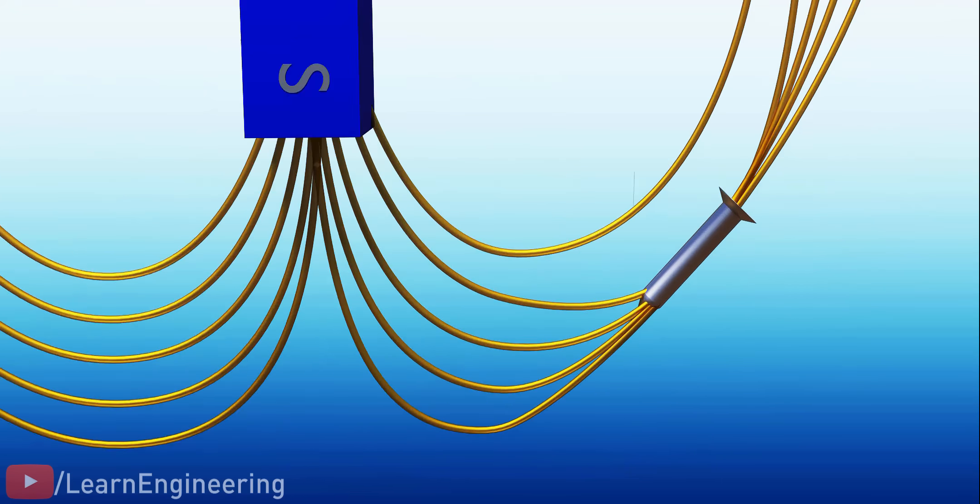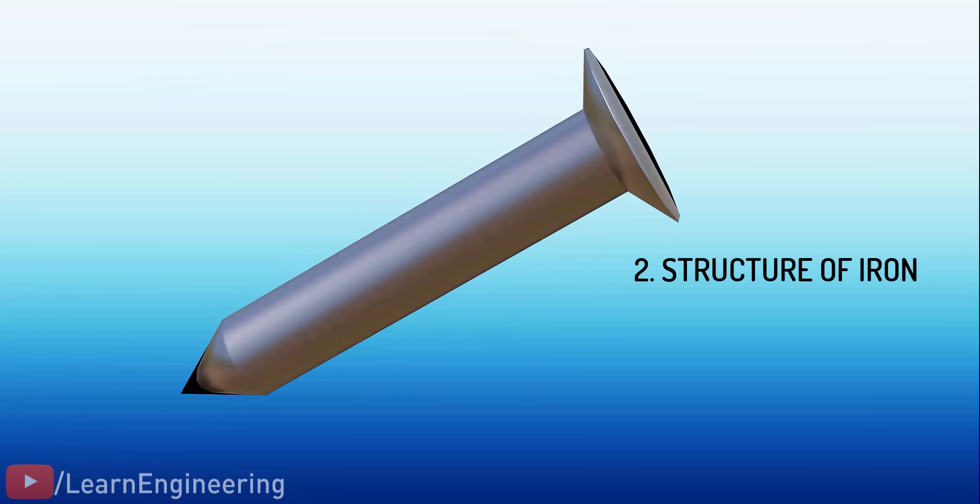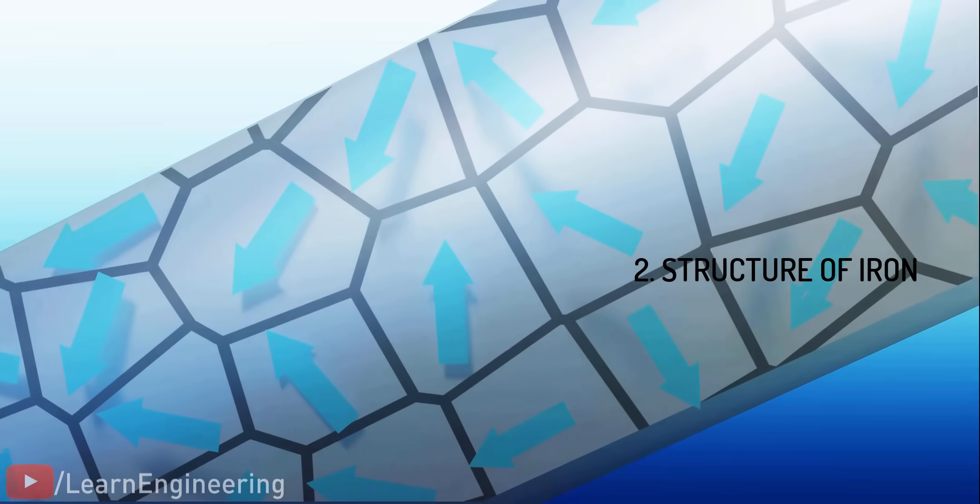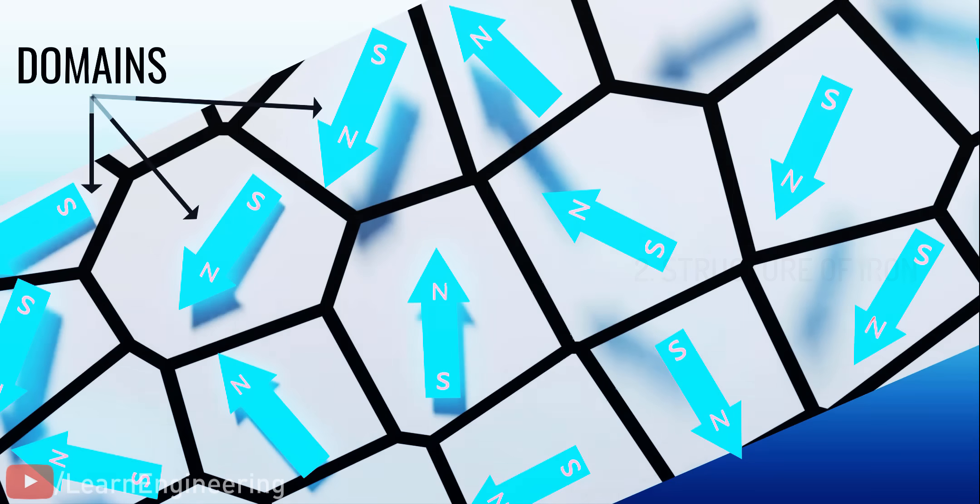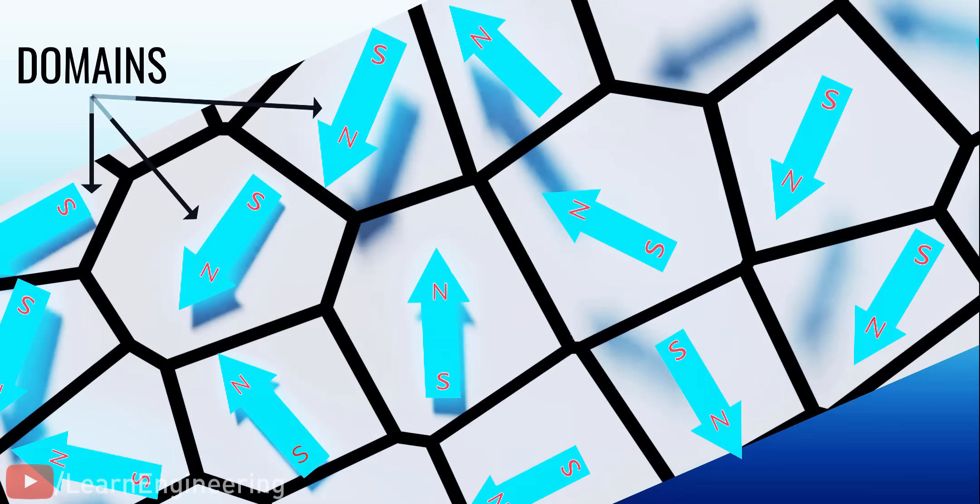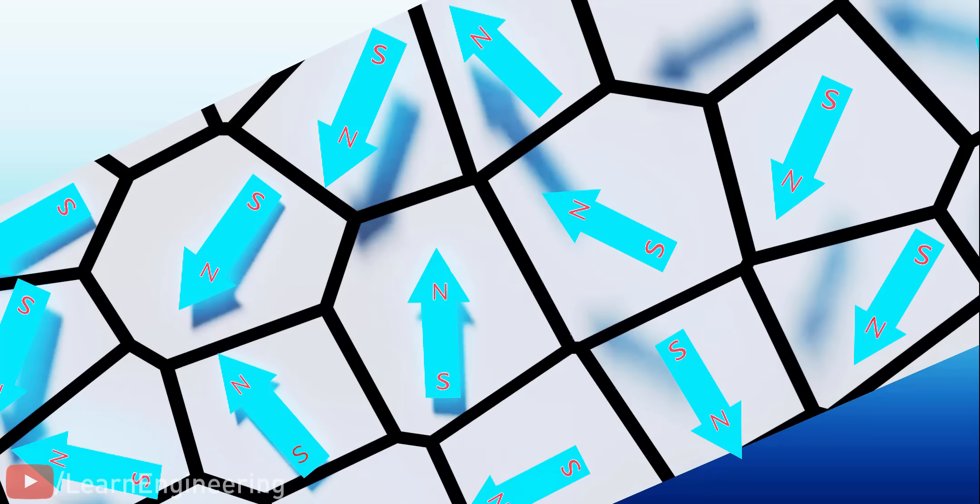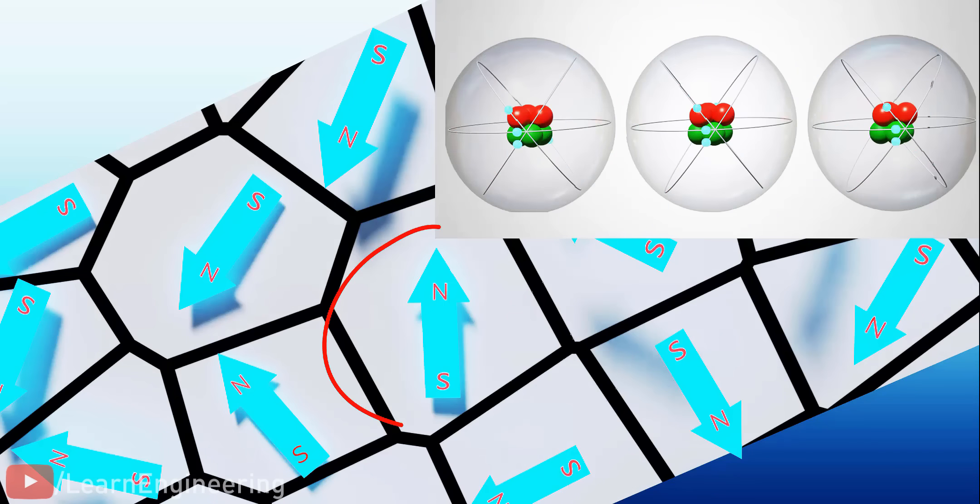Now, let's learn about the structure of iron. Iron has a domain-based structure. Domains are small areas with individual magnetic poles. However, as you can see, these poles are naturally arranged in a random direction, so if you sum up the total magnetic field, it cancels out. A typical domain area is the result of atoms with unpaired electrons spinning in the same direction as shown in this visual.